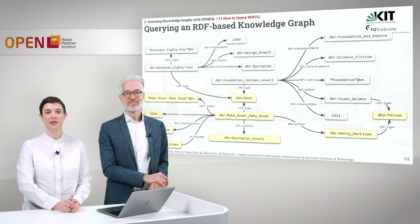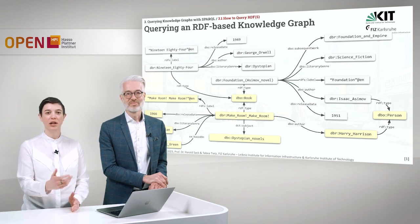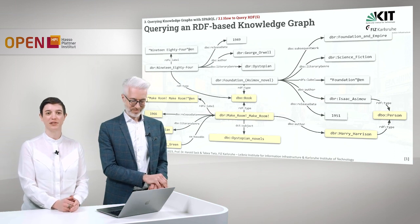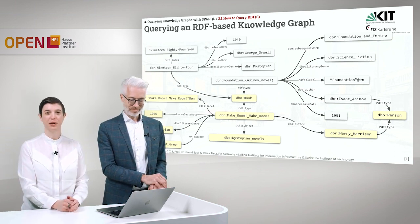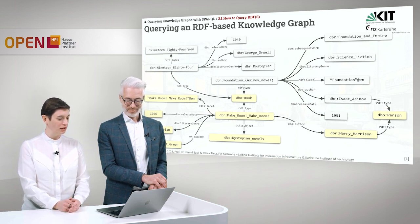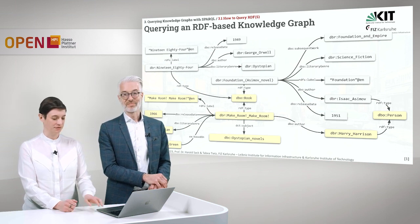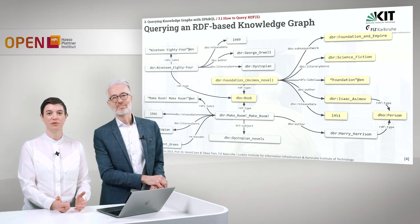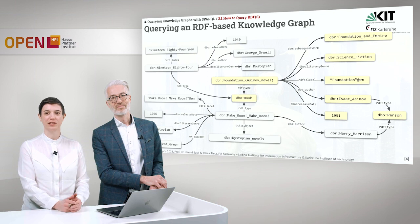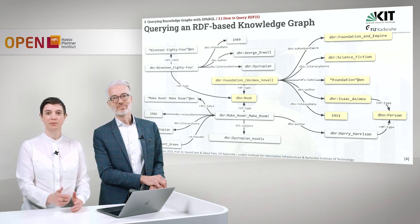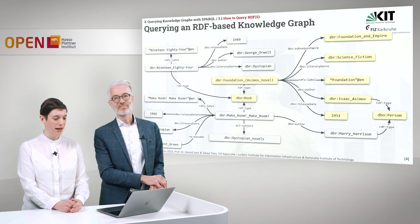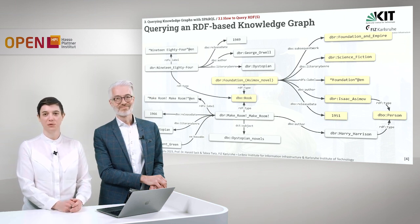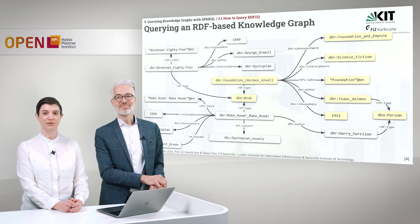The next book is called Make Room, Make Room. Here we also have a film connected to it — Soylent Green — which is actually based on the novel Make Room, Make Room. It's also a dystopian novel and was written by Harry Harrison. Last but not least, we have a book by Isaac Asimov — Foundation — which belongs to the Foundation series. The subsequent work is Foundation and Empire, and it belongs to the literary genre of science fiction.